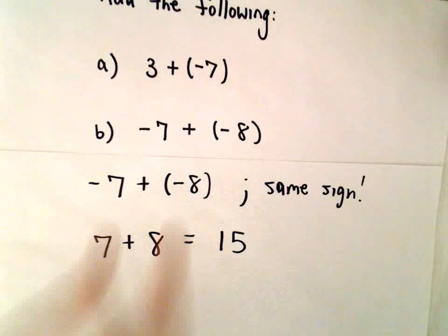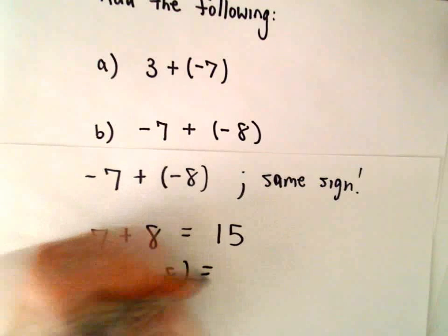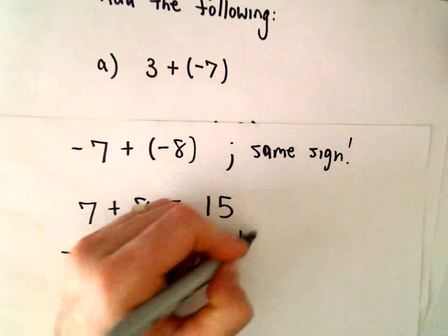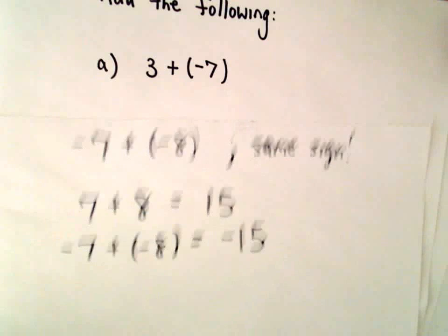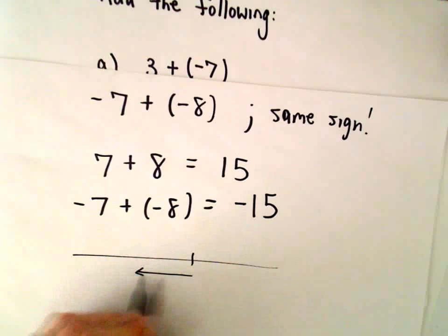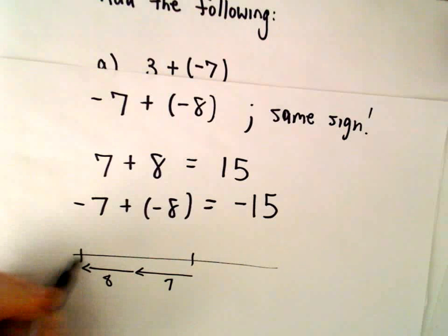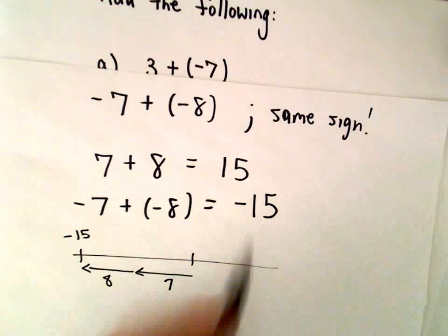But if they're the same sign, really what happens is instead of positive 15, we'll just get negative 15. And again, you can think about this in terms of a number line. You're going 7 units to the left, and then you go another 8 units to the left. Well, that's going to put you out there at negative 15.